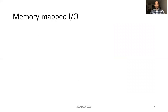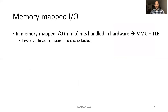An alternative way to access persistent data is to use memory-mapped I/O, and in Linux this is synonymous with MMAP. In memory-mapped I/O, hits are handled entirely in hardware through the memory management unit and the TLB. In the case of a TLB miss, an additional page table walk is also required. As hits are handled entirely in hardware, this provides less overhead compared to software cache lookups.